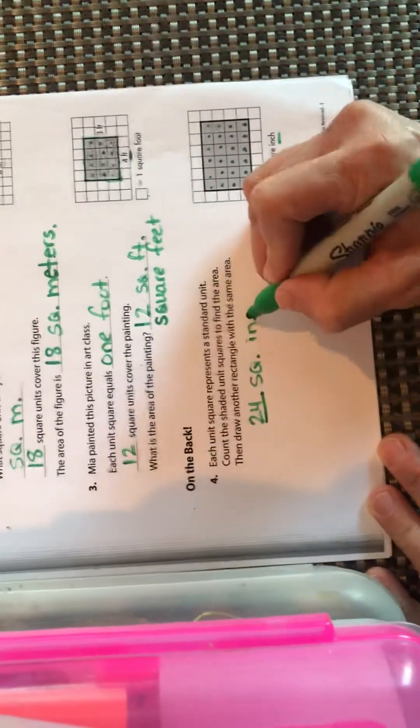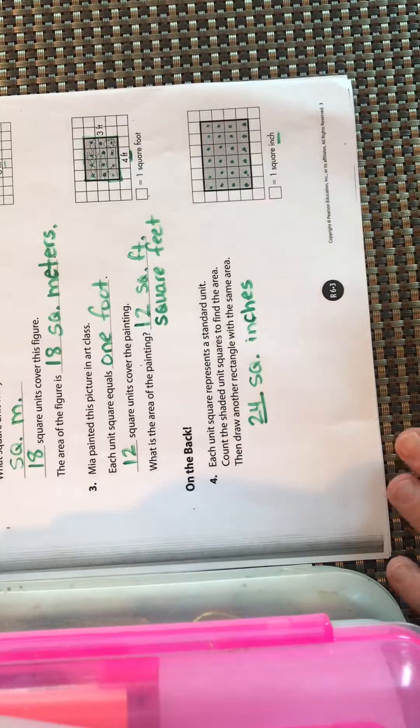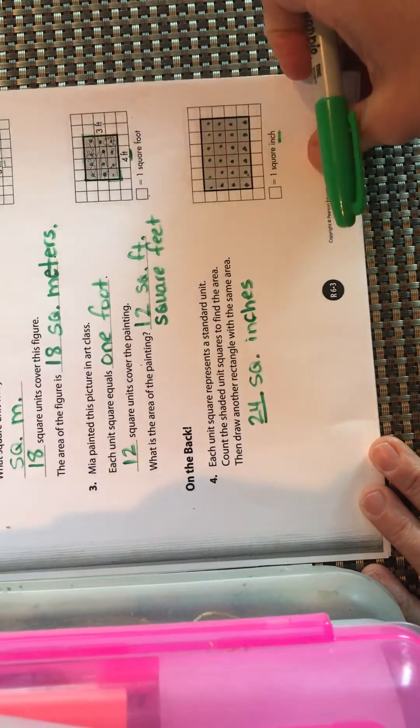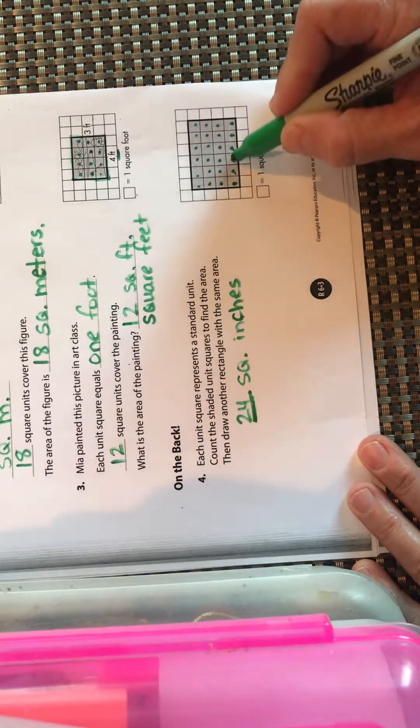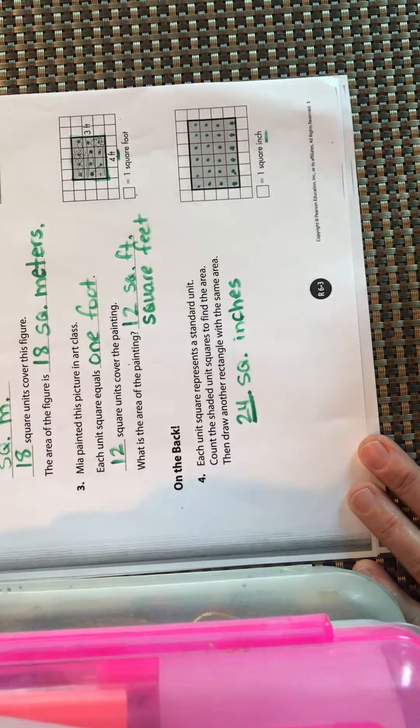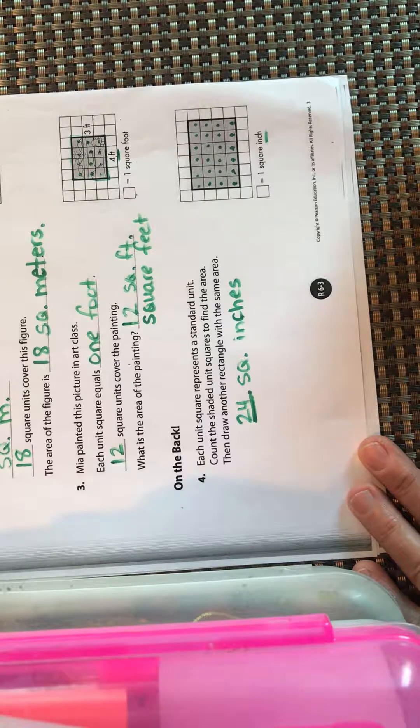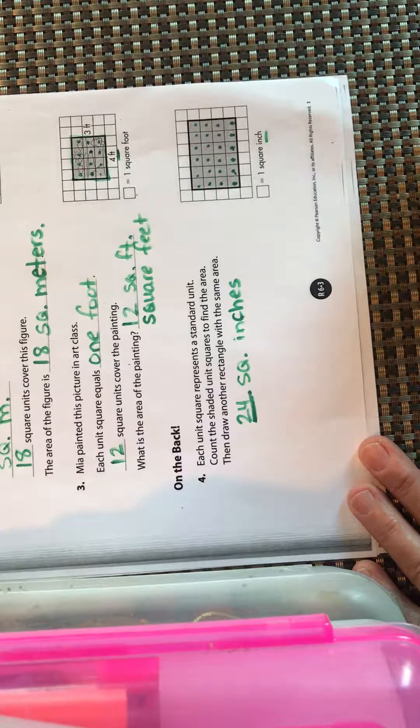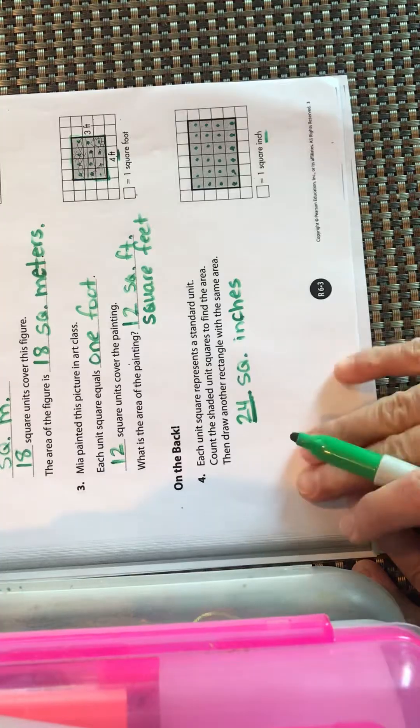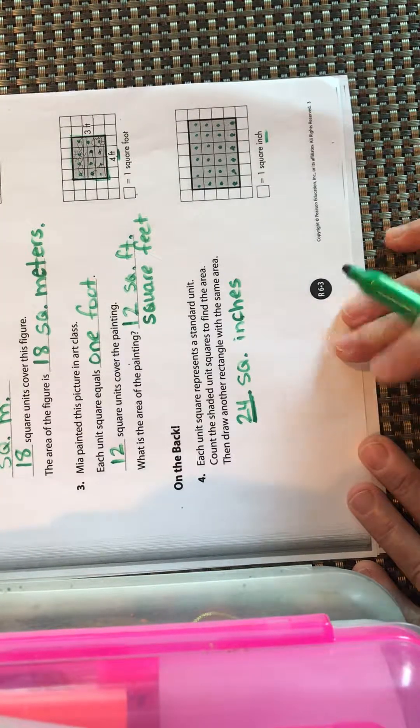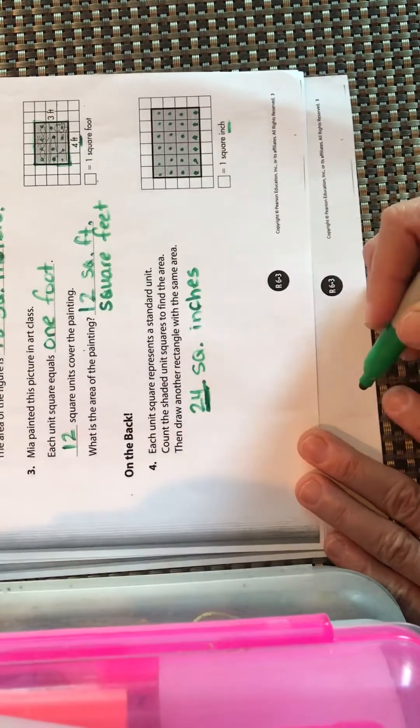Draw another rectangle with the same area. We want 24 square inches. We could think of what numbers equal 24. This was one, two, three, four, five, six times four. You could do two rows of 12, you could do three rows of eight. You could do six rows of four instead of four rows of six. I want you to draw your own and make sure it has 24 boxes in the middle, but it might be a totally different shape. Go ahead and pause it and do that.